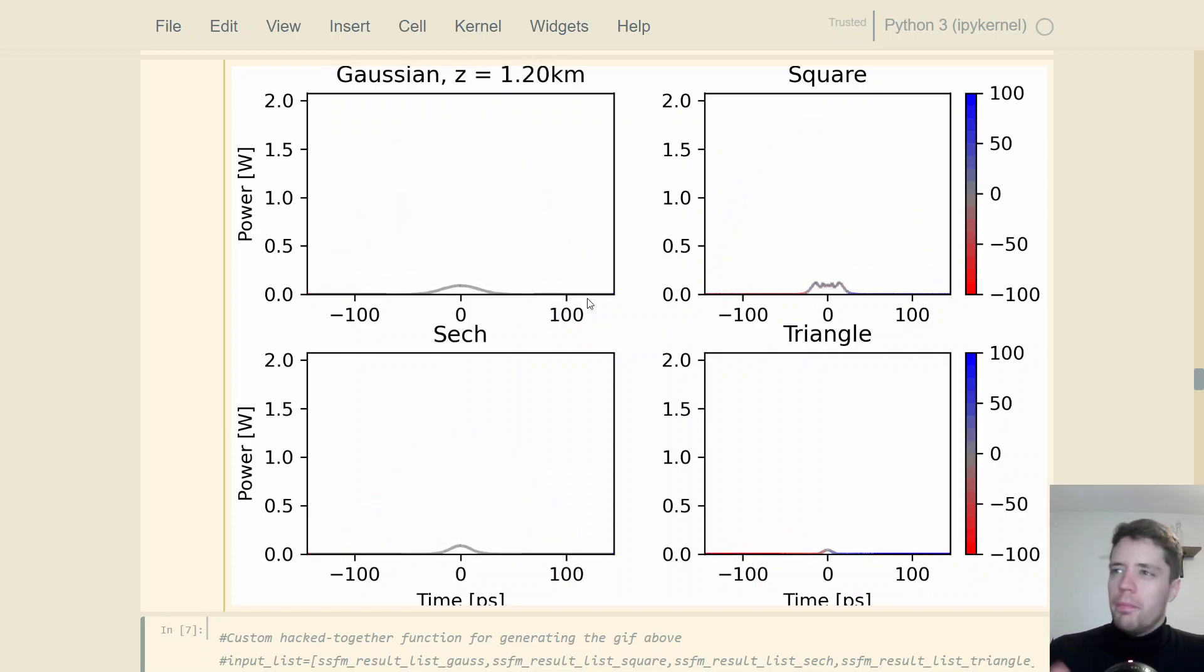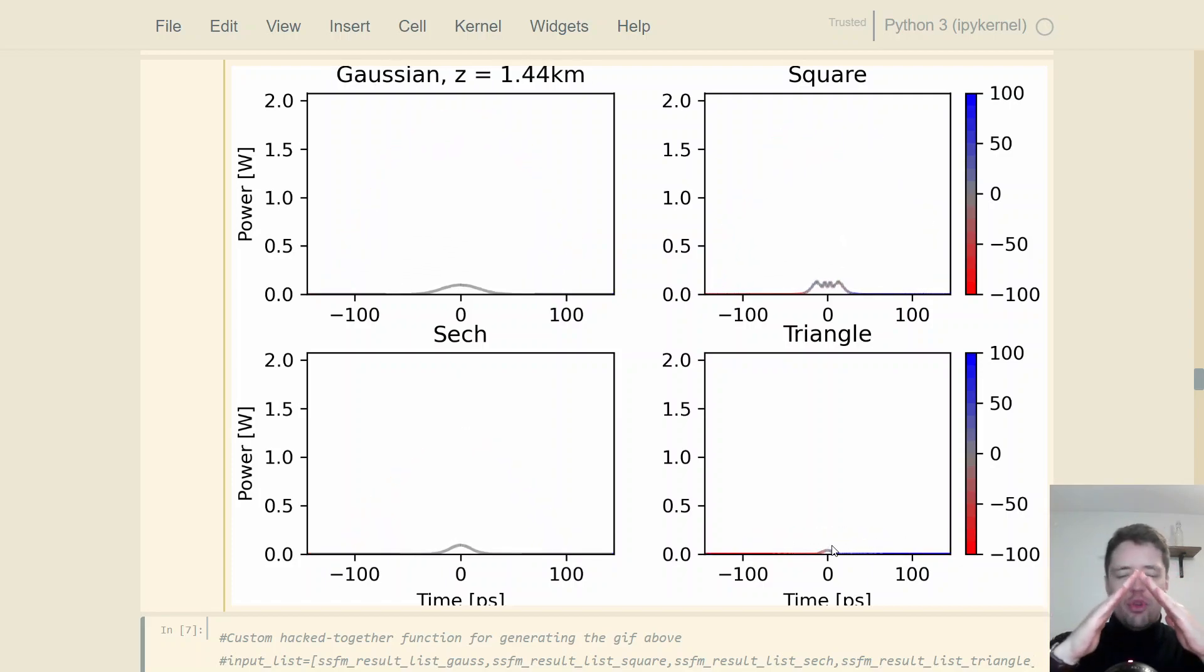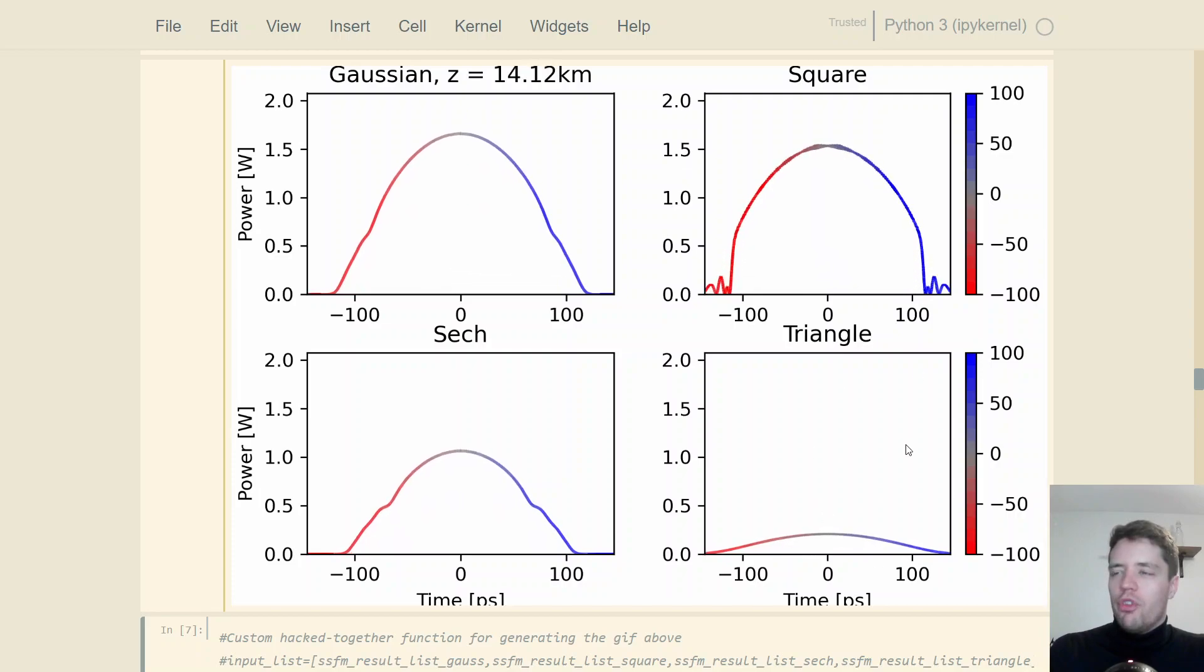I think actually the similariton behavior of the convergence towards a parabolic pulse is most striking for the square pulse here, because as you saw just a moment ago, it started with a lot of wiggling and optical wave breaking. But eventually, one of these peaks that arise actually gets picked up by the amplification and starts to grow into this parabolic shape here. It's kind of interesting to note as well that the triangular pulse down here in the corner seems to be the slowest one to converge towards a parabola. Now, I think the reason why that happens is that the very sharp slopes of this triangular pulse will basically all experience very strong self-phase modulation, so they'll very quickly sort of broaden out and then flatten out, and then the similariton behavior sort of starts to pick up after that broadening has happened, and it begins to look more like a parabola. Then this sort of speeds up and starts to converge towards the parabolic shape.